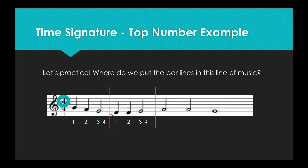Time to count again: 1, 2, 3, 4. That's 4 counts — time to draw another bar line. Let's count one more time: 1, 2, 3, 4. That's 4 counts. Remember, this is the end of the song, so we draw a double bar line to show that.